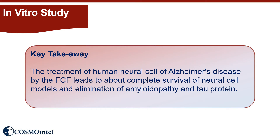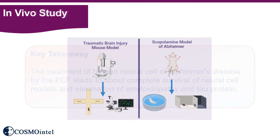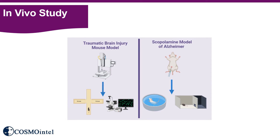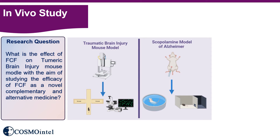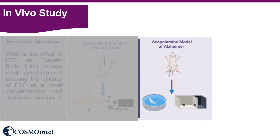From the results, we can conclude that treatment of the human neuron cell Alzheimer's model by FCF led to near-complete survival of neuron cells and elimination of amyloidopathy and tau protein. Two in vivo studies were conducted. In one study, we used a traumatic brain injury mouse model and measured changes in tau protein content and behavior in the elevated plus maze under FCF treatment. Details of this study can be found on the Cosmo Intel website.